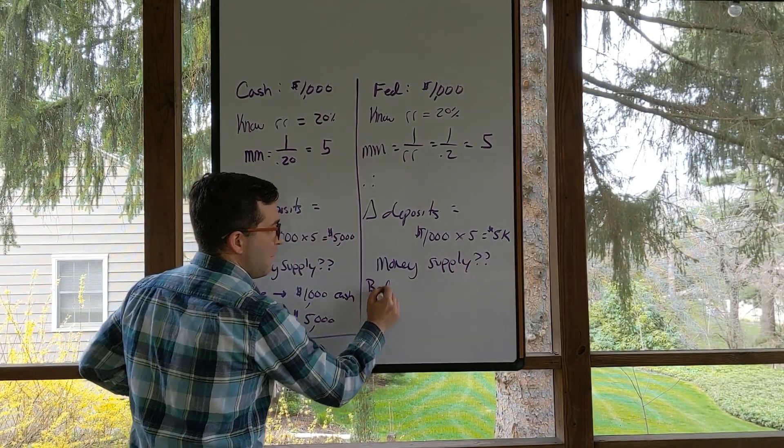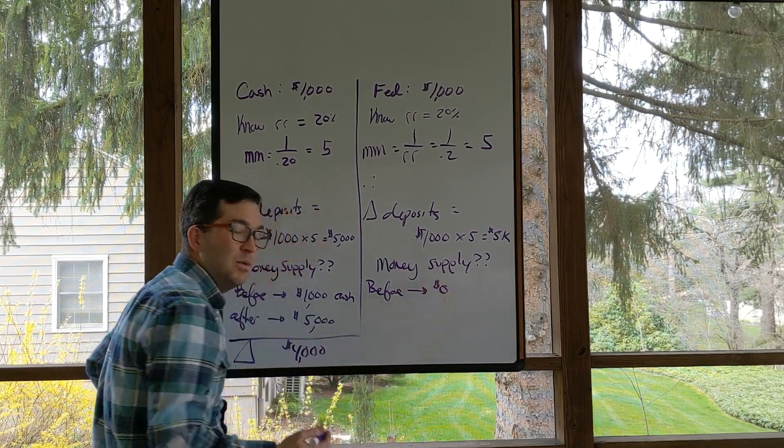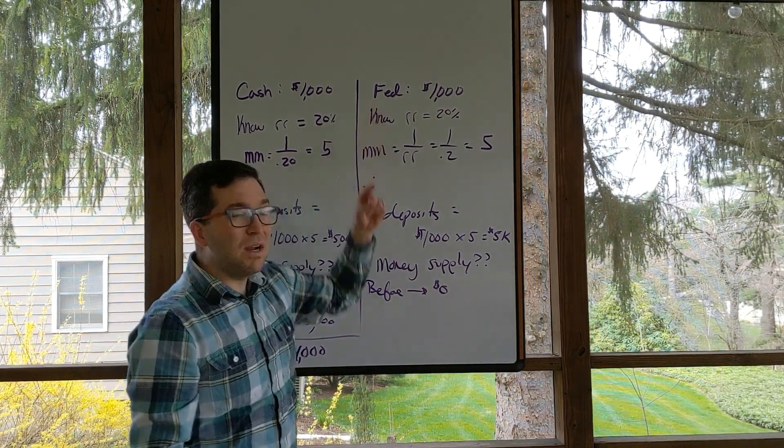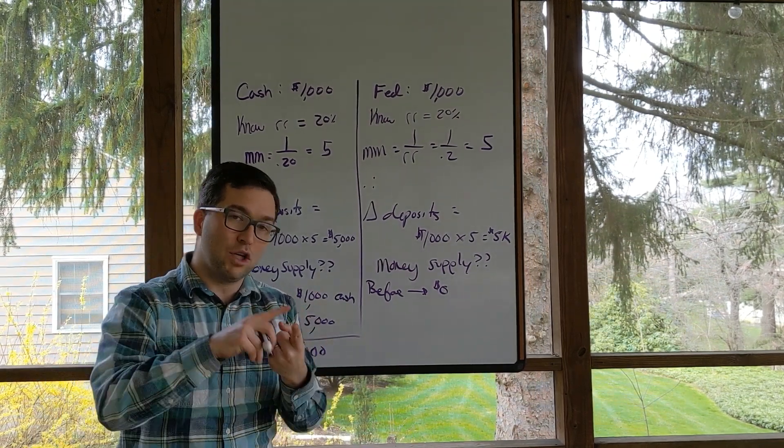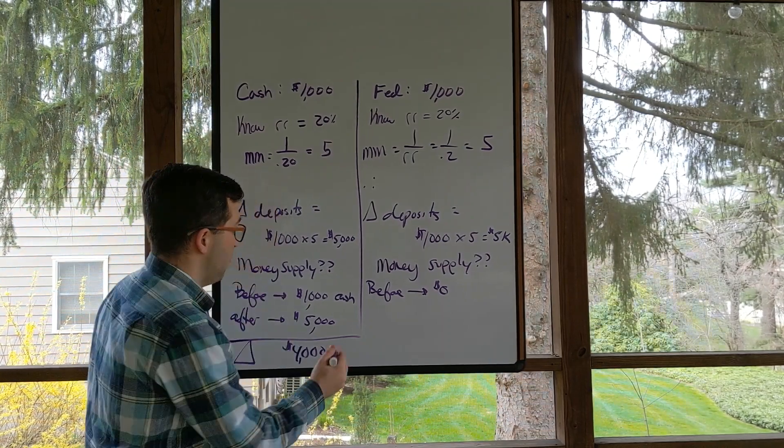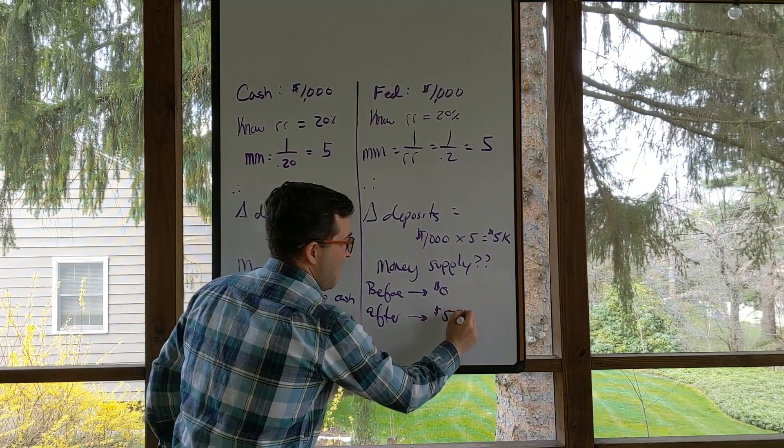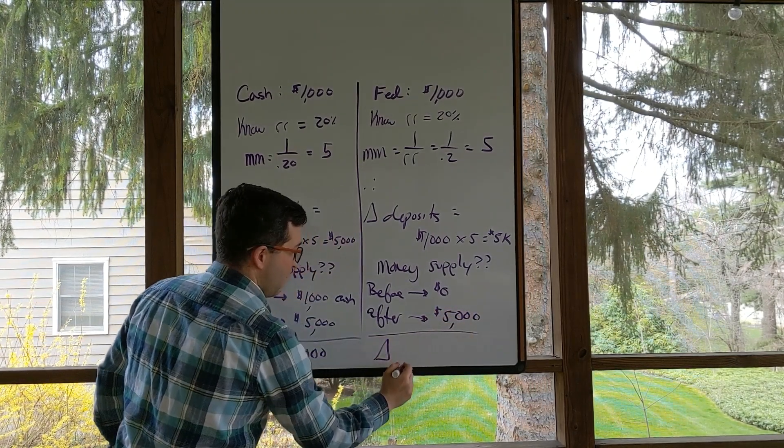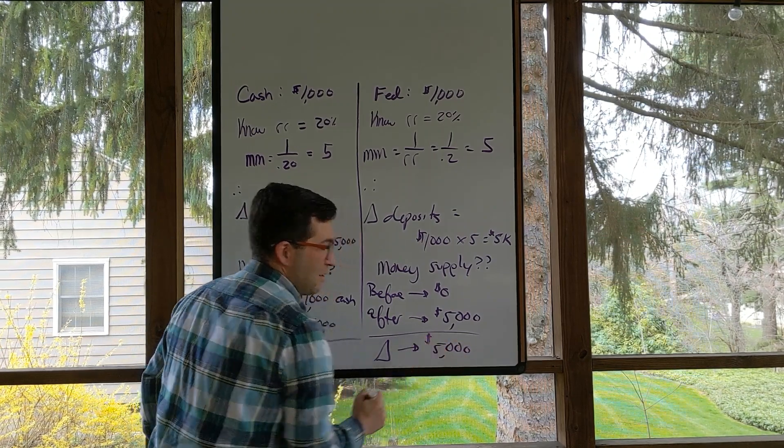Well, what was the money supply before? It was zero because this money from the Federal Reserve or from some outside organization was not part of currency or checking accounts. And now after we see it is that $5,000. So the change in the money supply is going to be the full $5,000.